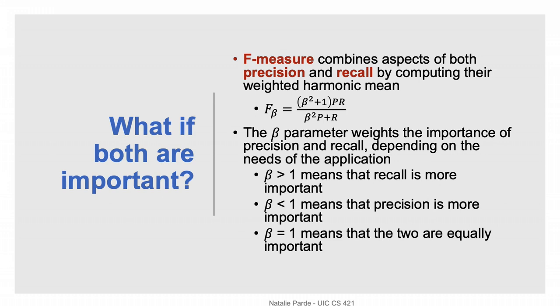If both are important, that's where F-measure comes in. F-measure is the weighted harmonic mean between precision and recall. It takes a parameter beta that decides which of precision and recall is more important. If beta is greater than one, recall is more important. If beta is less than one, precision is more important, and if beta equals one, they're equally important.